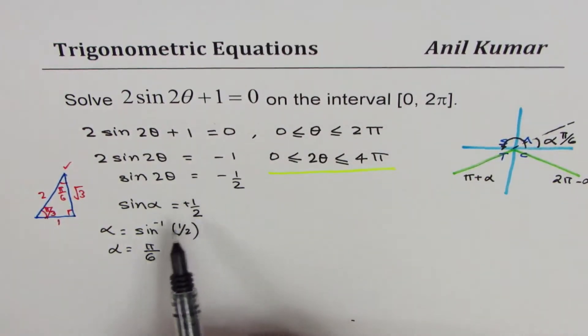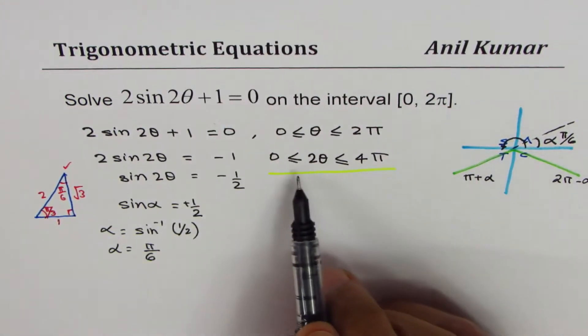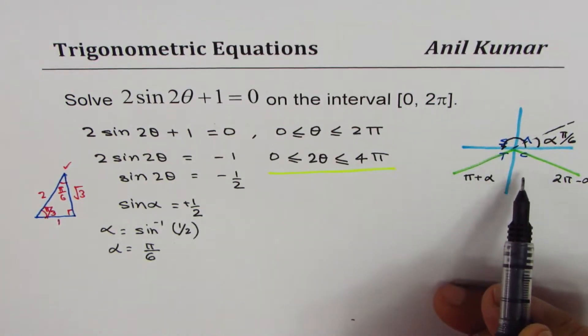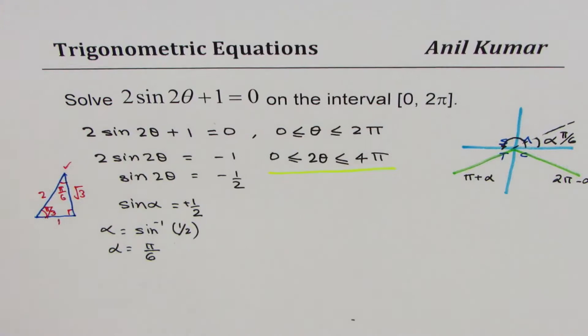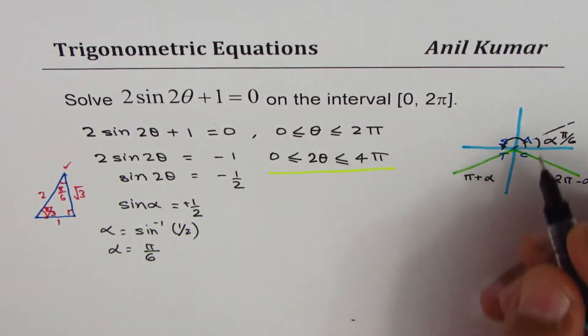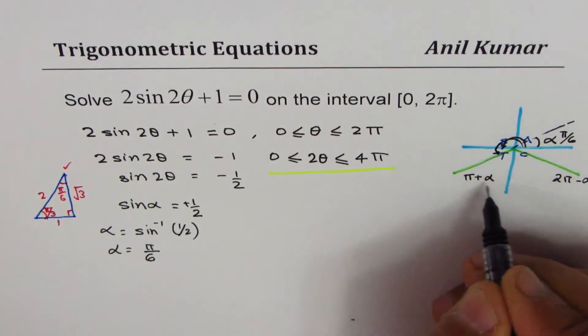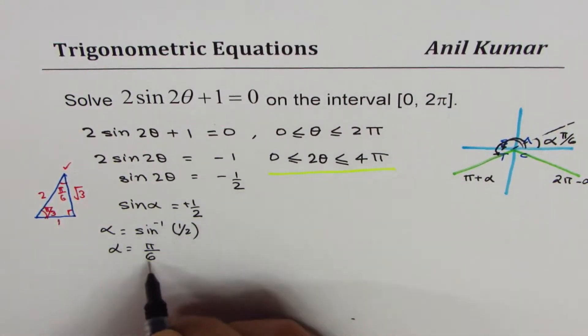Now remember that this angle 2θ which we are considering should be between 0 to 4π. So how many values do we get? We'll add π to our results. One of them here is this angle which is...